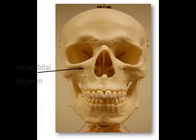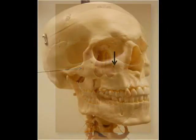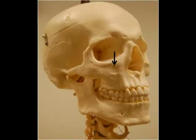Just inferior to the orbit is an opening called the infraorbital foramen, which allows passage of the infraorbital blood vessels and nerves, which is a branch of the maxillary division of the trigeminal nerve, which is cranial nerve 5.